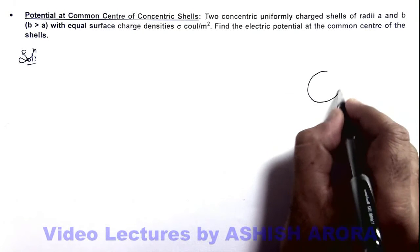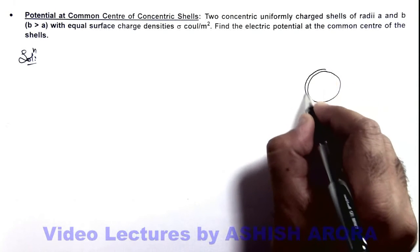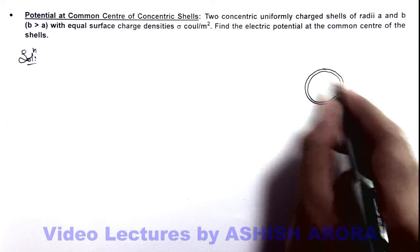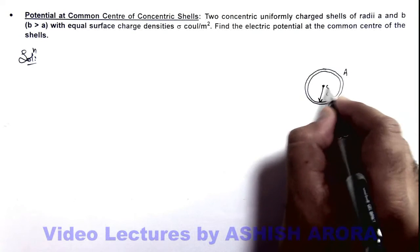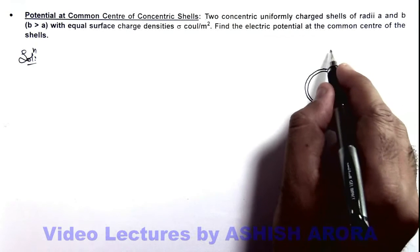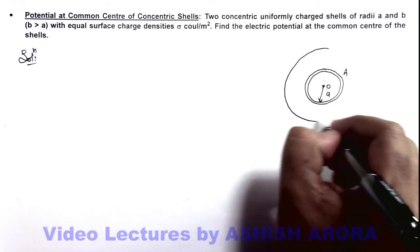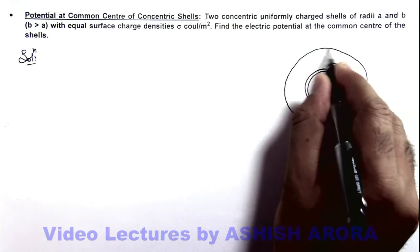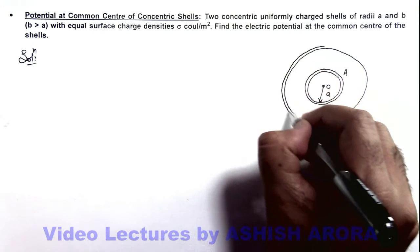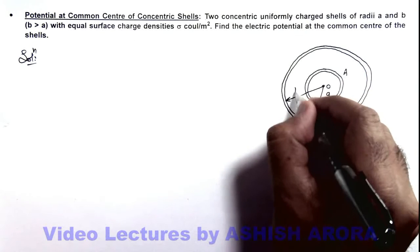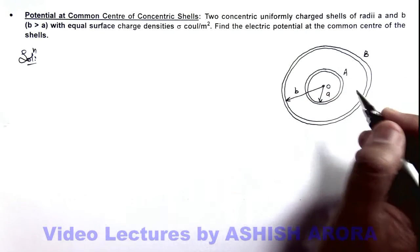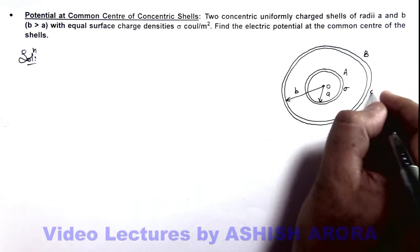So here in this situation if we draw the picture, say this is the inner shell. We name it a, which is of radius a, and the common center is O. And the other one, the outer shell which is of radius b, we mark it as body b. And say it is of radius b.